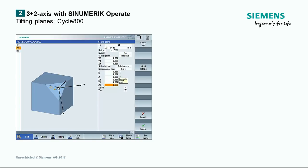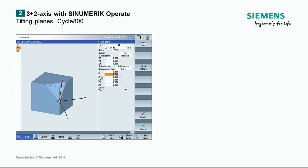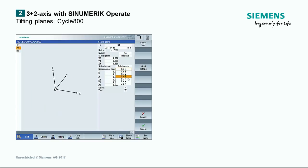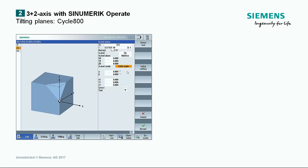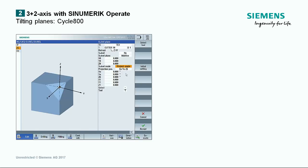Axis-by-axis swivelling is the easiest to understand and most commonly used in practice. The individual axes of the coordinate system are rotated through the specified number of degrees in the specified sequence. With the solid angle swivel version, the tool is first rotated around the Z-axis and then around the Y-axis, with the second rotation based on the first. Angles are specified using alpha and beta. If a projection angle is selected, rotation is realised with coordinate system parameters — used in practice only when the inclined plane is specified with projection angles in the workpiece drawing.